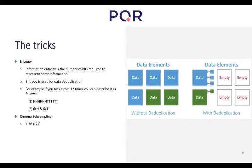The first trick is entropy. Entropy is the number of bits required to represent some information — it describes how many bits you need to save the data, and is used in most deduplication engines. A simple example: if you toss a coin 12 times, you can write out each result individually — head, head, head, head, head, tail, tail, tail, tail — or you can just say six times head and six times tail. The second example is already deduplicated: you created two values and a mapping array indicating how many times each was used.